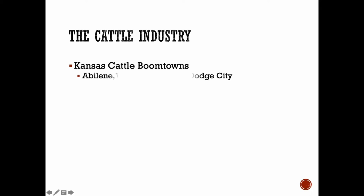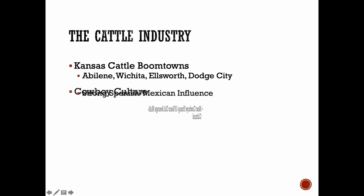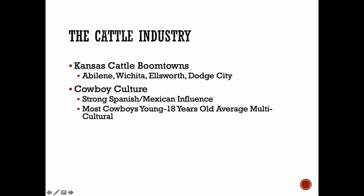The cattle industry created several boom towns along the rail line: Abilene, Kansas; Wichita, Kansas; Ellsworth; and Dodge City. It kept moving west as the railroad moved west, because there was a lot of animosity against Texas cattle. They were blamed for fevers caused by ticks, which was influencing other cattle. Laws were passed against Texas cattle passing through various towns, which is why the trails kept moving further and further west.